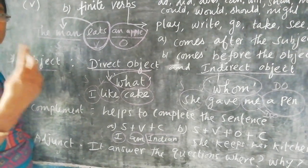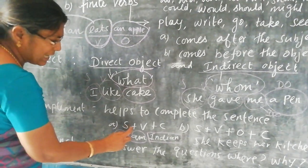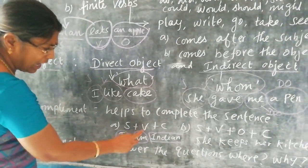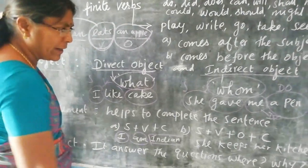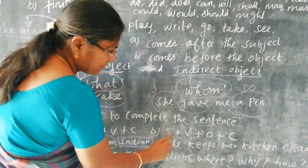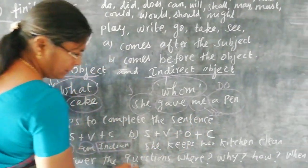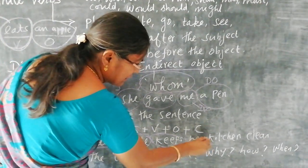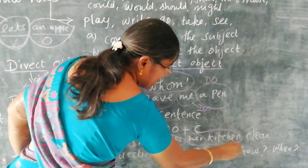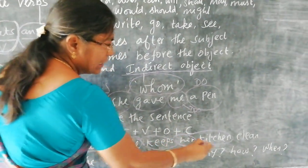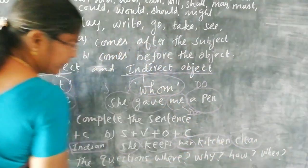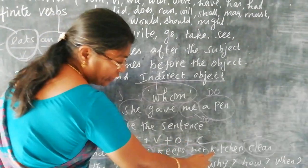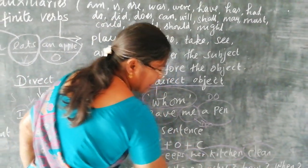There are two patterns with complements. One is SVC — subject, verb, and complement: 'I am Indian' where 'I' is the subject, 'am' is the verb, 'Indian' is the complement. Another pattern is SVOC — subject, verb, object, and complement: 'She keeps her kitchen clean' where 'she' is the subject, 'keeps' is the verb, 'her kitchen' is the object, and 'clean' is the complement.